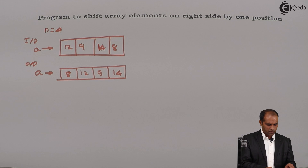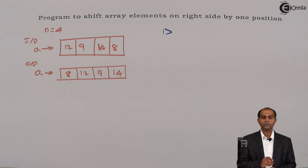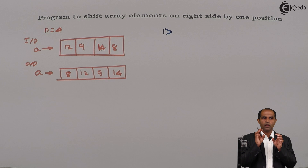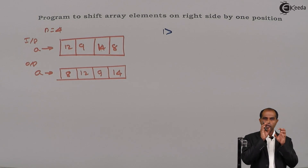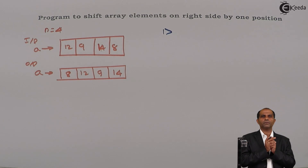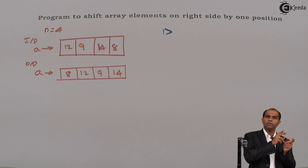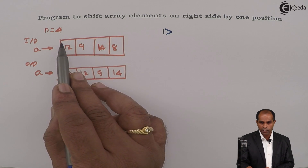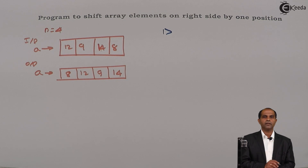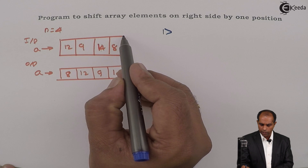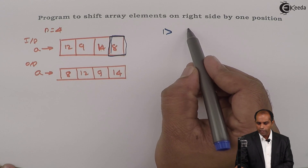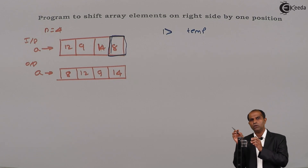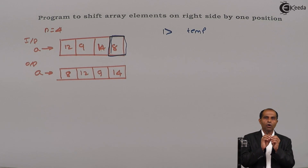You can remember this entire logic in three simple steps. Step number one: whenever you do a shifting operation, one element will move out and occupy the other side. In a right shift, the last element will occupy the first position, and in a left shift, the first element will occupy the last position. So here I am going to transfer A of N minus 1 into the first location, but you can't do it directly. Whatever element is going to go out must be copied into a temporary variable.